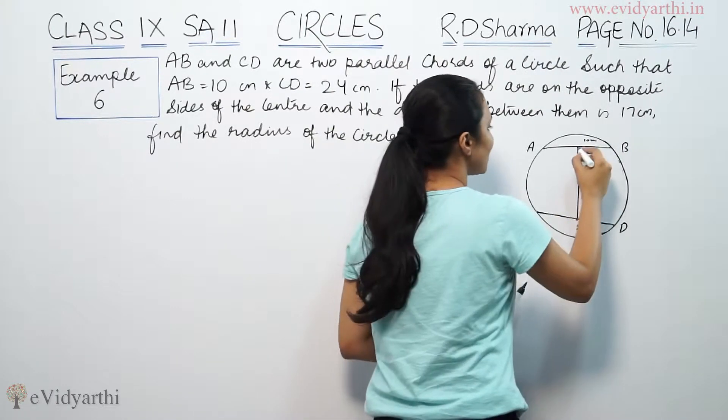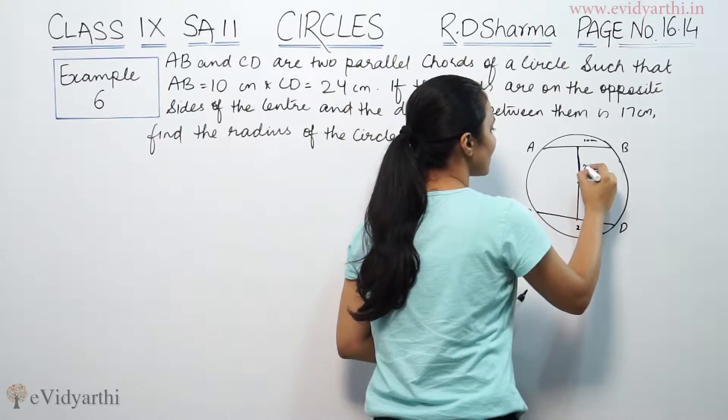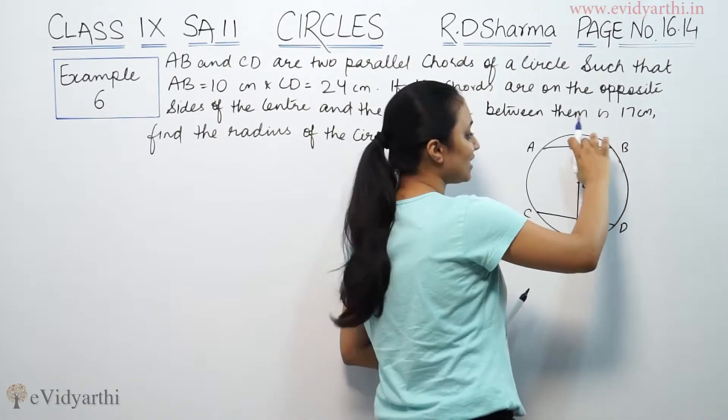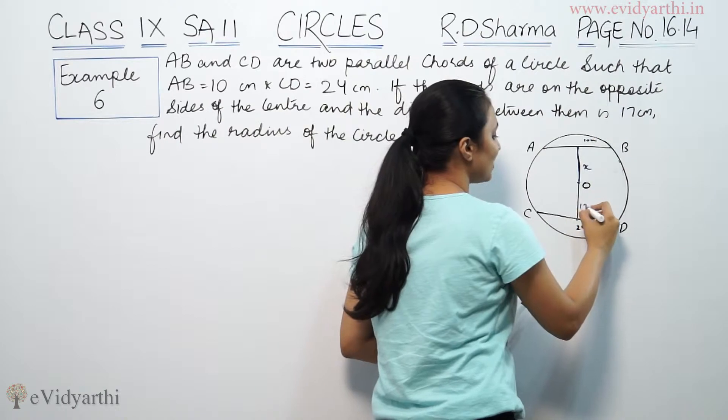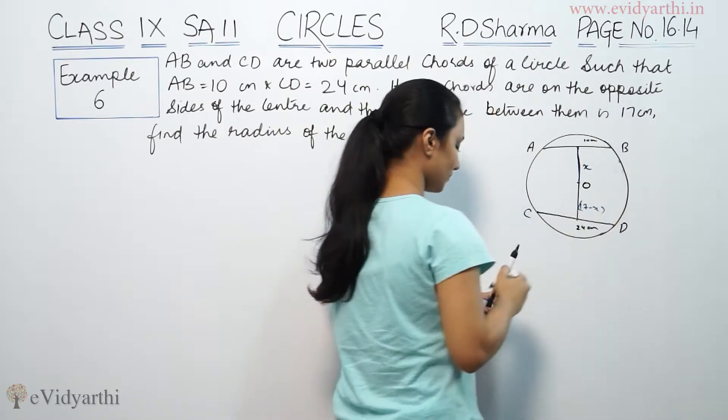So I am going to tell you that this distance, this part is x. Then it is 17. This is 17 minus x.